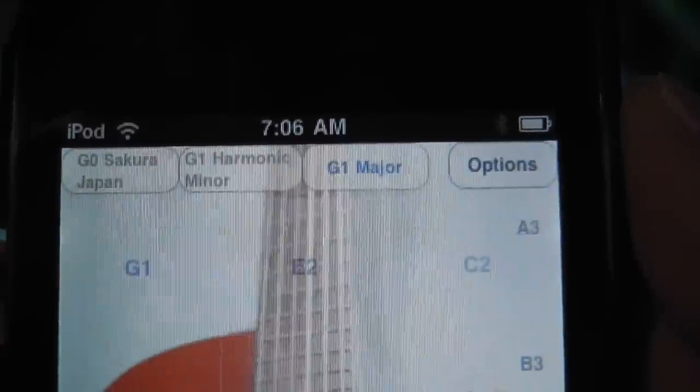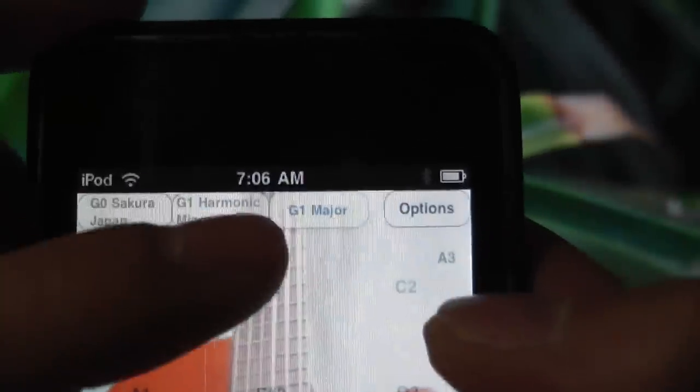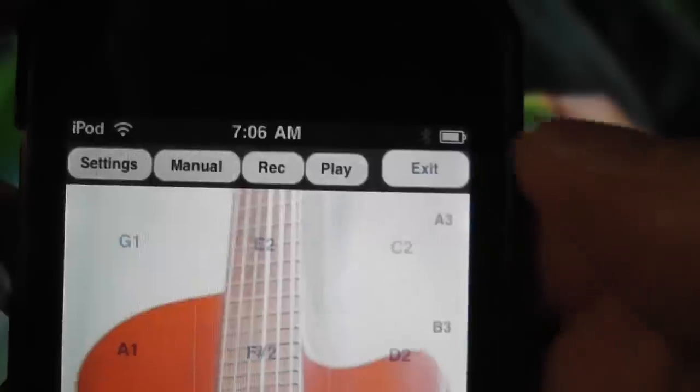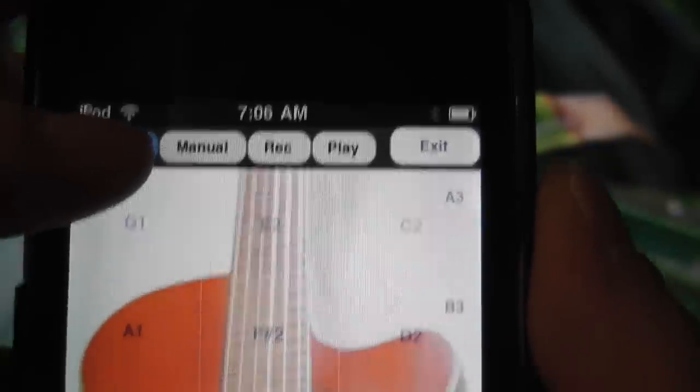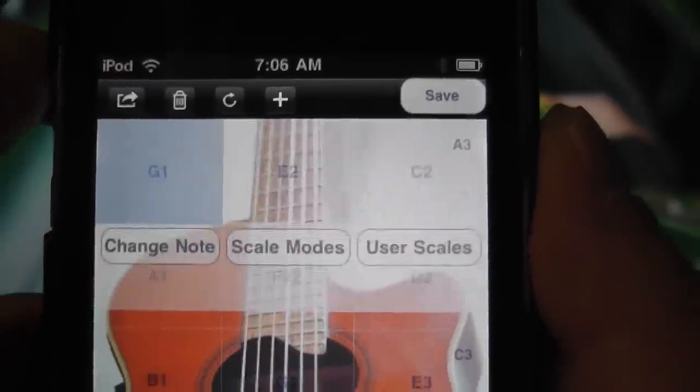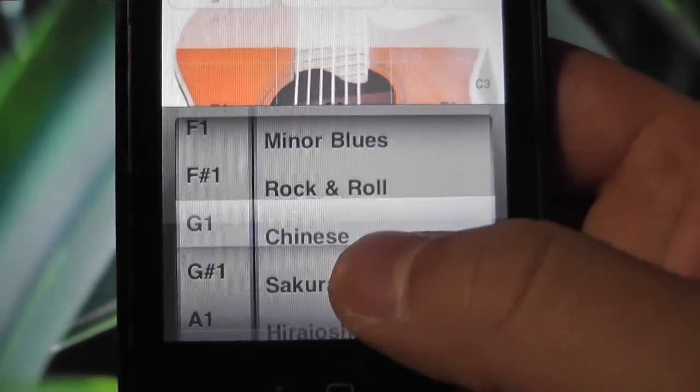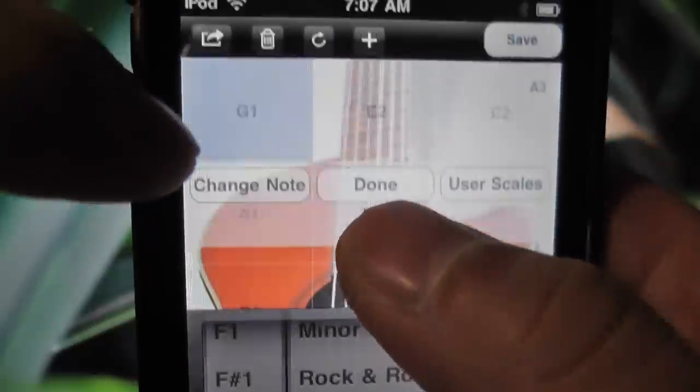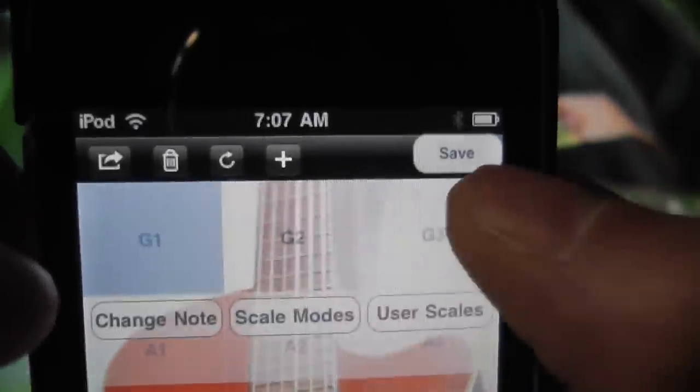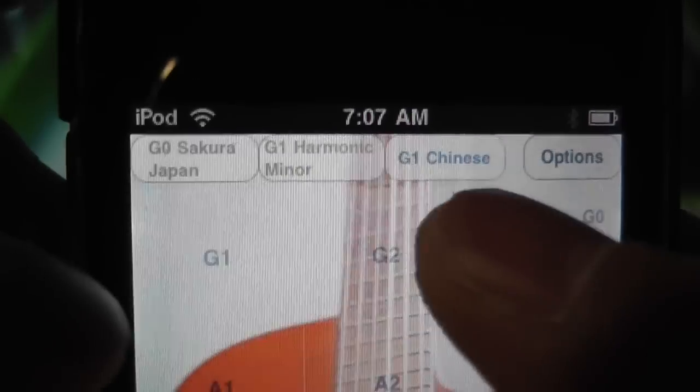Before I leave, I'm going to teach you how to change your scales. So if I don't want to use a major scale anymore, I can tap on options and tap on settings, and then tap on scale modes to change the scale. So I have a list of 22 scales here. You can choose any of them. For example, a Chinese scale right here. Tap on the done button and then save and then exit. Now we're in the G Chinese scale.